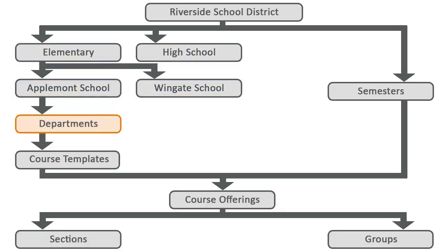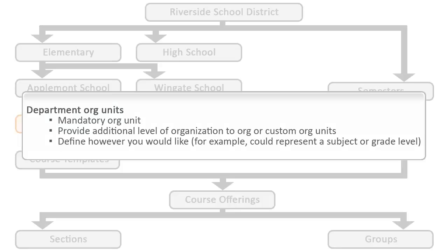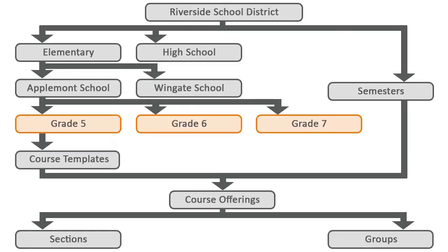Departments are mandatory org units that divide the org level or custom org units. Department org units organize courses and learners within the overall tree structure. You can define these org units however you'd like. For example, a department org unit can represent a subject or grade level. In this example, the department org units depict the grade levels taught within the school: grades 5, 6, and 7.